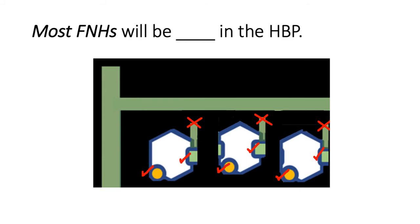And last, most FNH will be blank in the hepatobiliary phase. So this is the FNH. They are composed of hepatocytes with transporters with bile canaliculi.